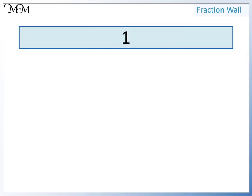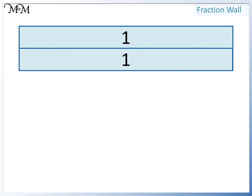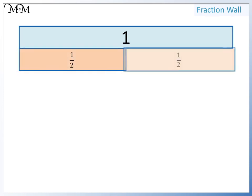Here is one whole. We can take another whole and divide it into two. We now have two halves: one, two.